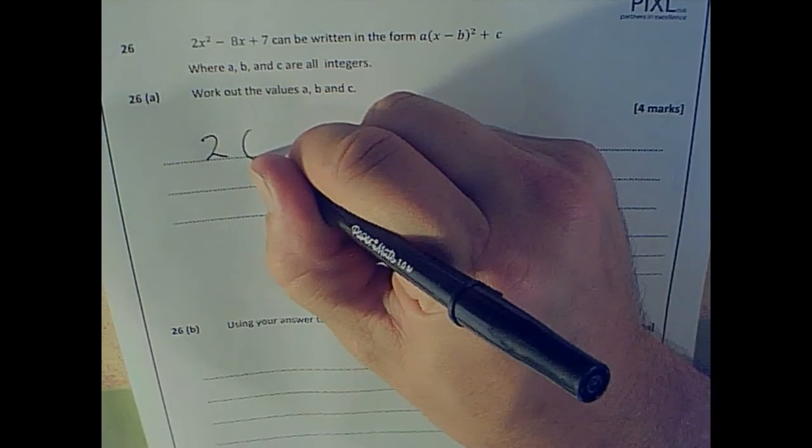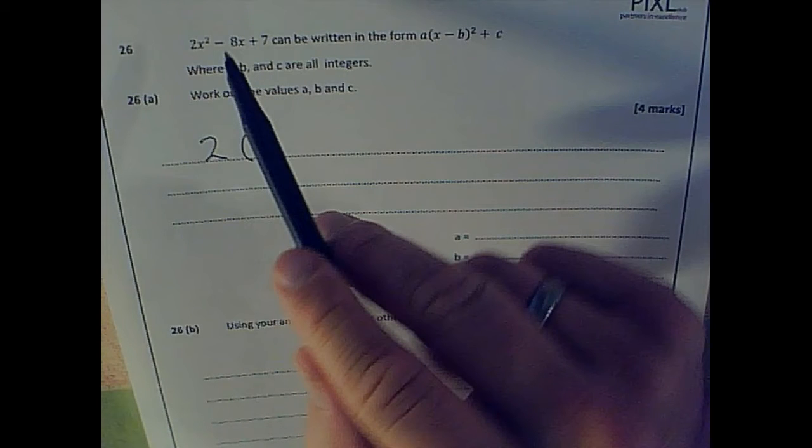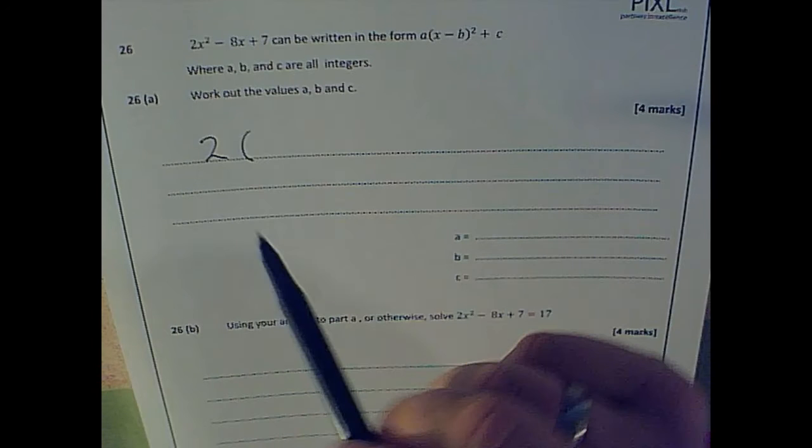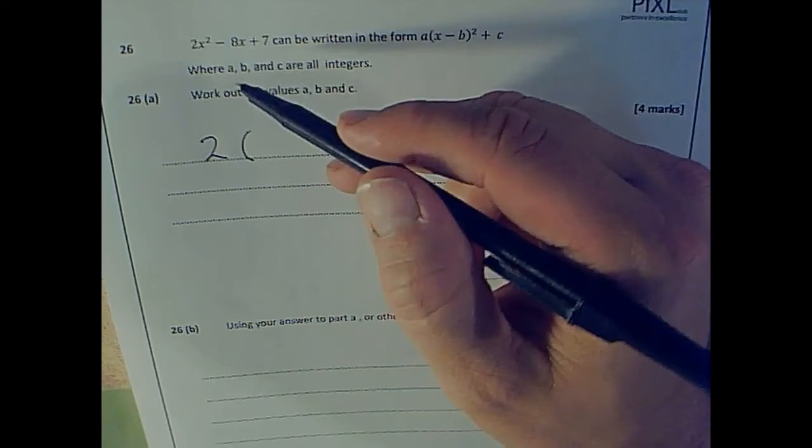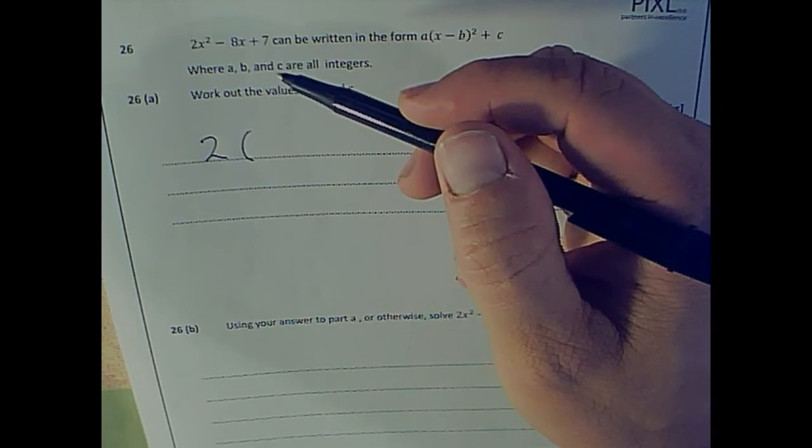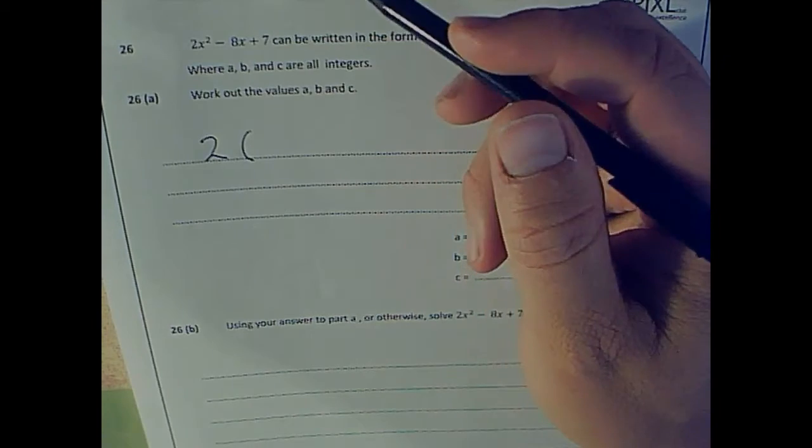Normally with completing the square, this would be x minus 4, right? Because that would then give me, when I square that, when I square x minus 4, I'll get x squared minus 4x minus 4x, then plus 16.